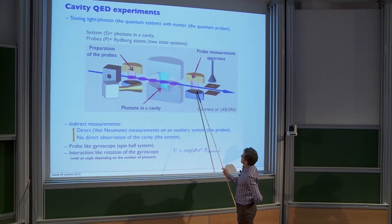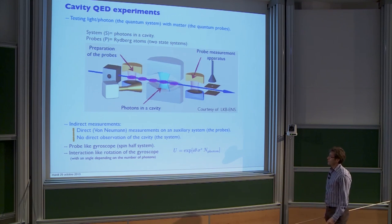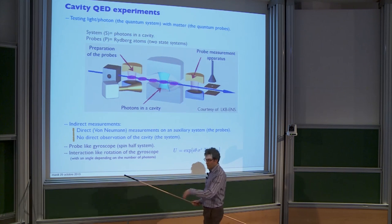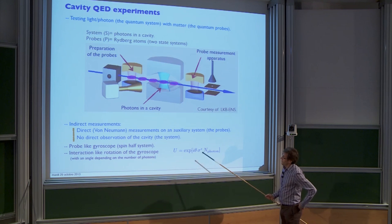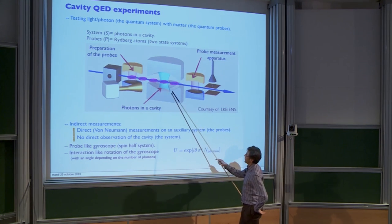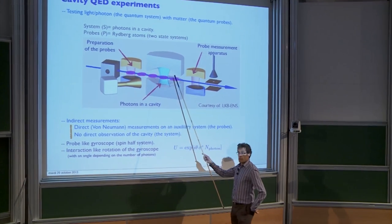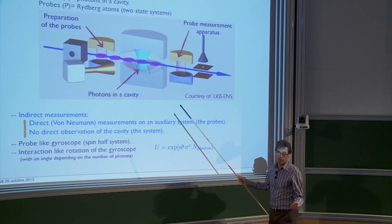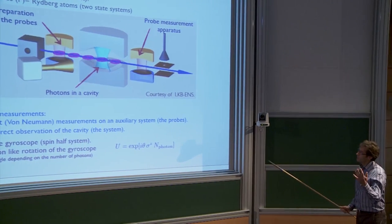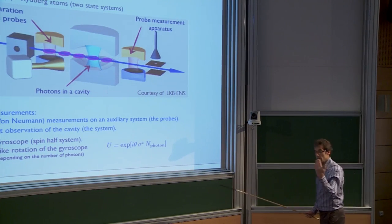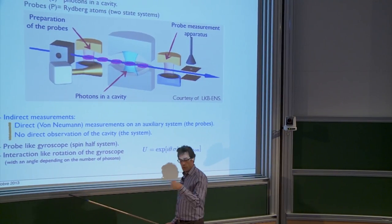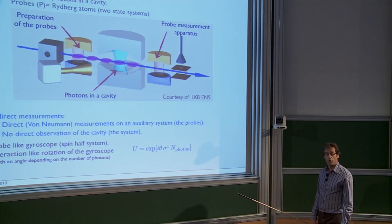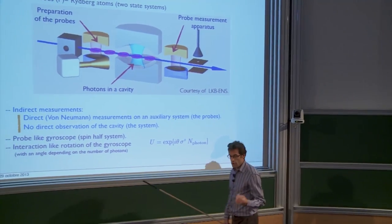The state of the system after the atom has gone through the cavity depends on their interaction. The effective description is that if there are n photons in the cavity, it will rotate the spin of the atom by some angle theta depending on the cavity structure. If the cavity is in a state with a given number of photons, it remains in that state, but the atom's spin undergoes a rotation. By measuring the angle of rotation, you learn something about the number of photons in the cavity — that's what they use to observe the jumps.